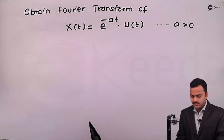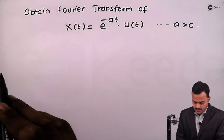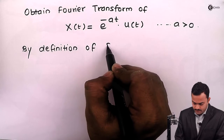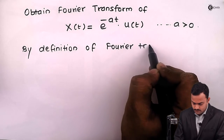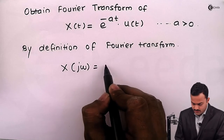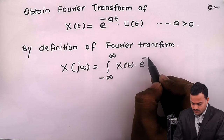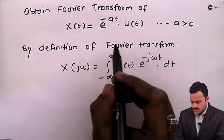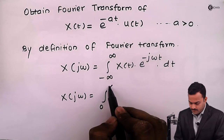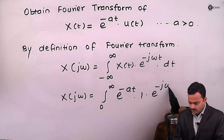By using the definition of Fourier transform, we need to find the Fourier transform of x(t) and we will plot the magnitude and phase. By definition, X(jω) is given as the integral from minus infinity to infinity of x(t) e^(-jωt) dt. Since u(t) is present, the limits of integration become 0 to infinity, and x(t) = e^(-at), so u(t) = 1, giving e^(-at) · e^(-jωt) dt.